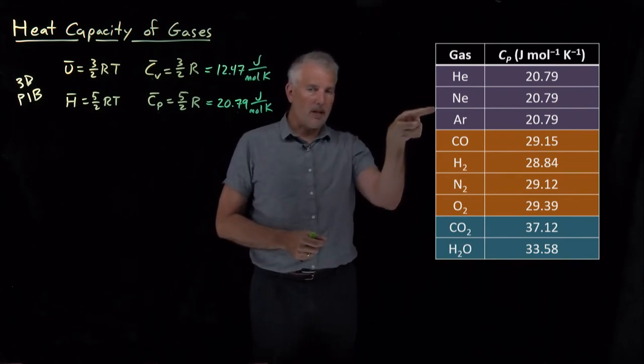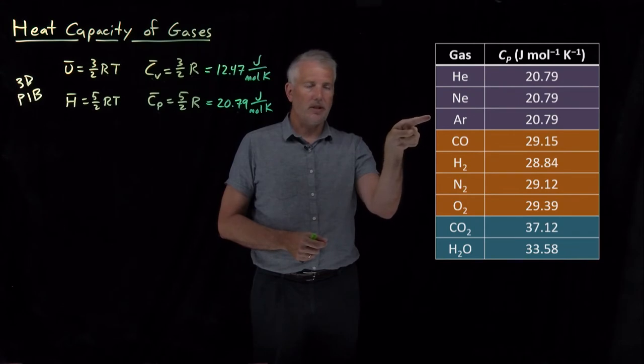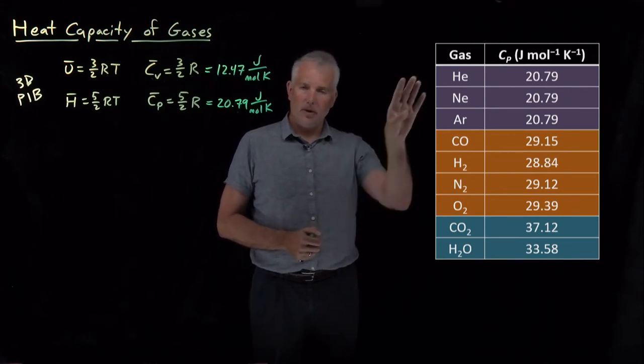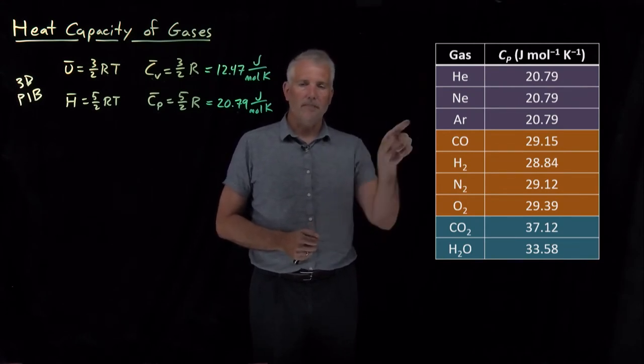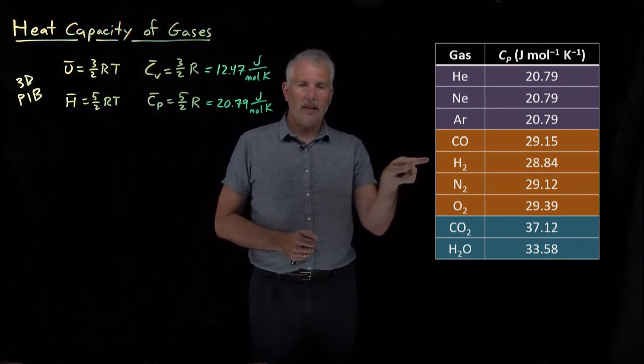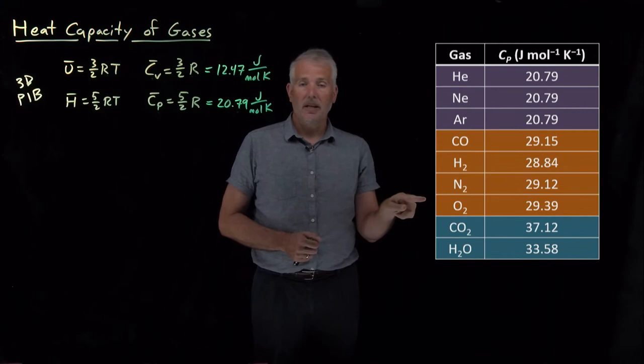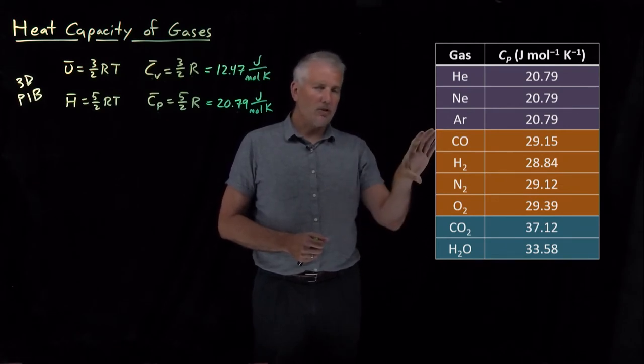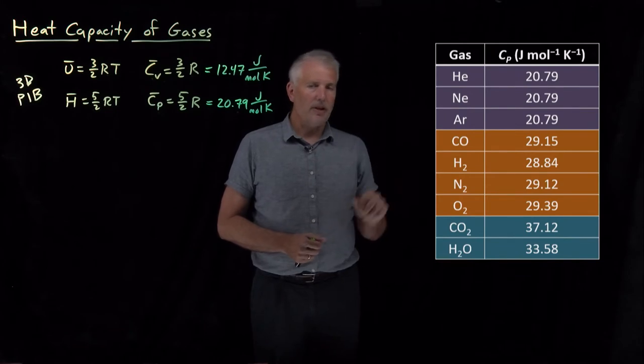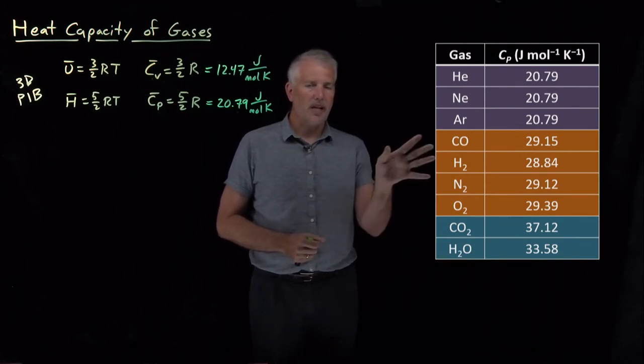We can see that for the monatomic gases, helium, neon, argon are just gases that are composed of a single atom. Those predictions are perfect. Carbon monoxide, hydrogen gas, nitrogen gas, oxygen gas, those are diatomic gases. The prediction is much less good for them, but all of those values are pretty close to each other. So it seems like there's a different value that's a reasonable estimate for diatomic gases.